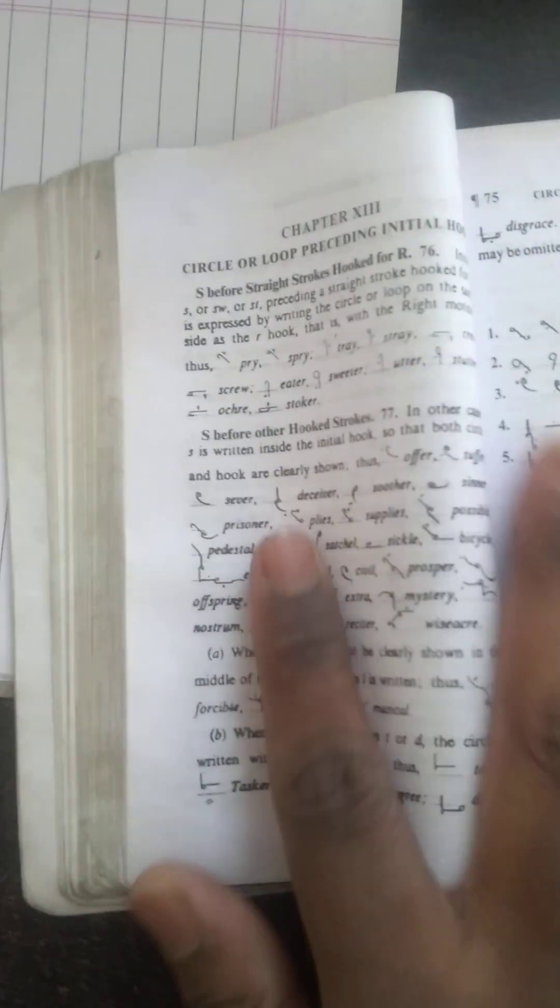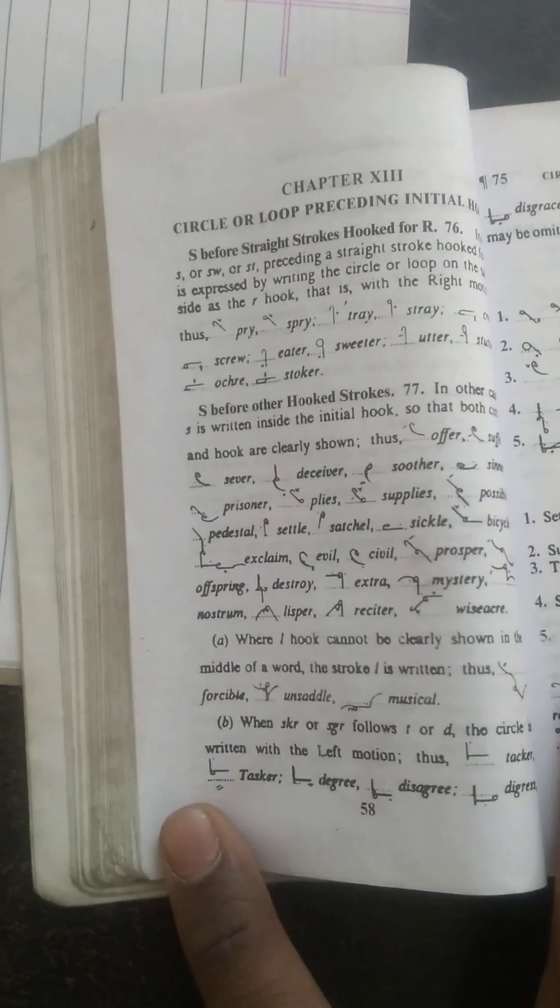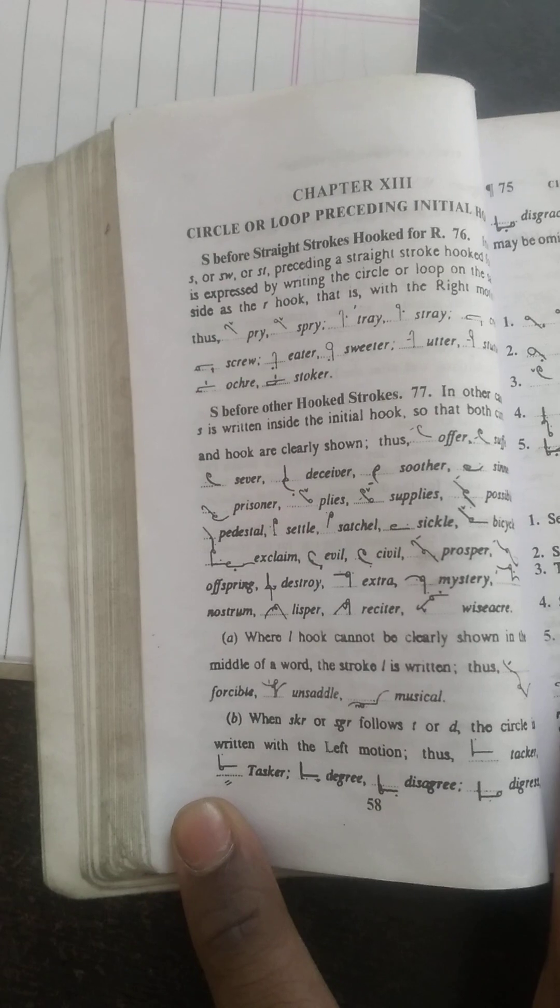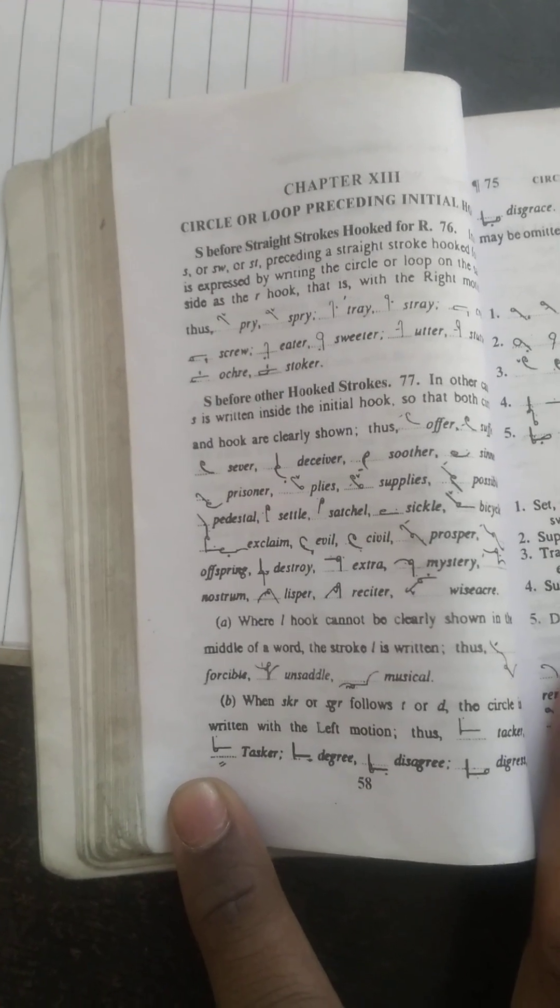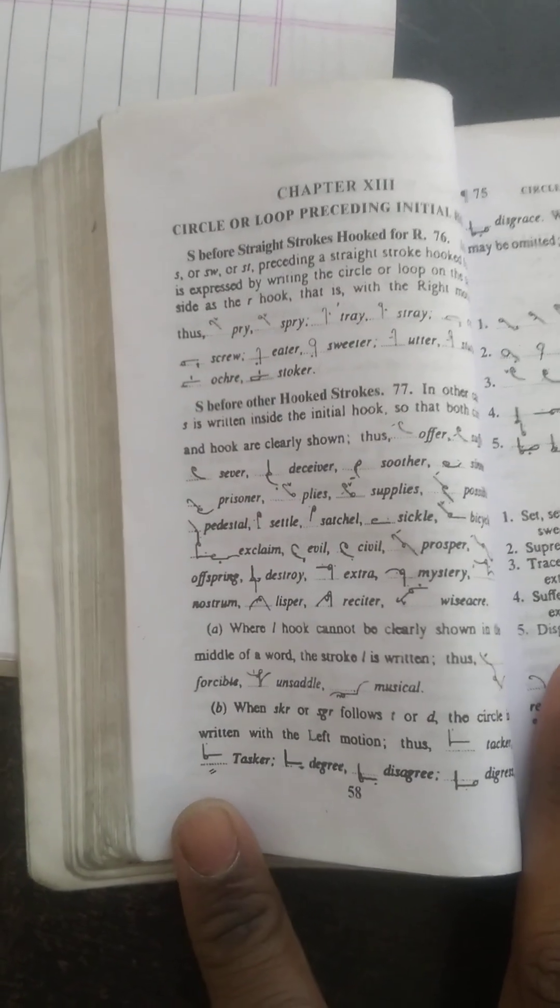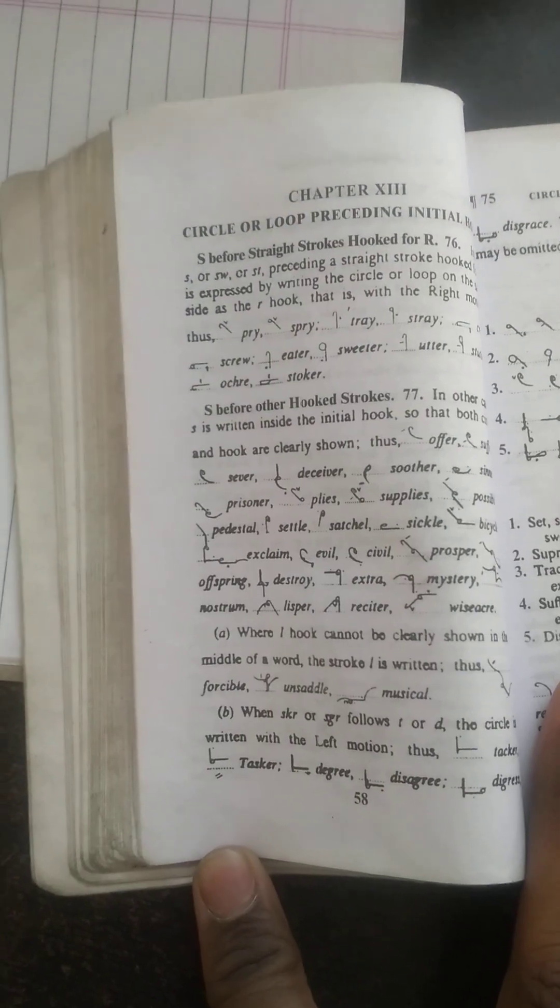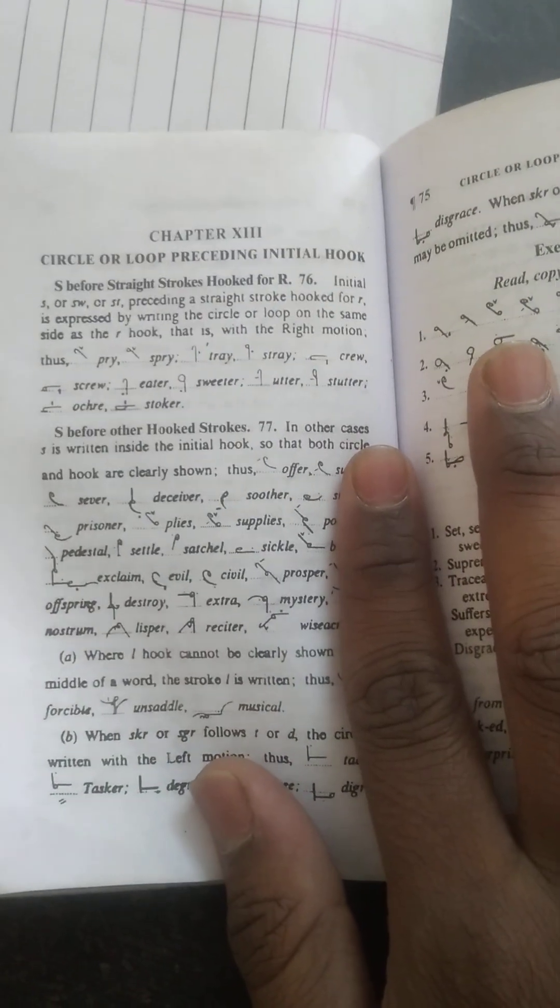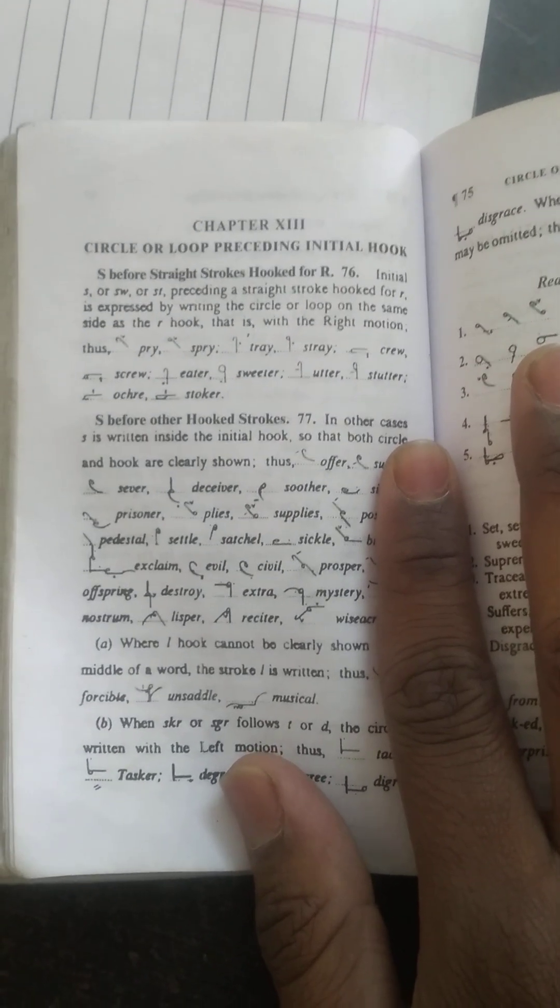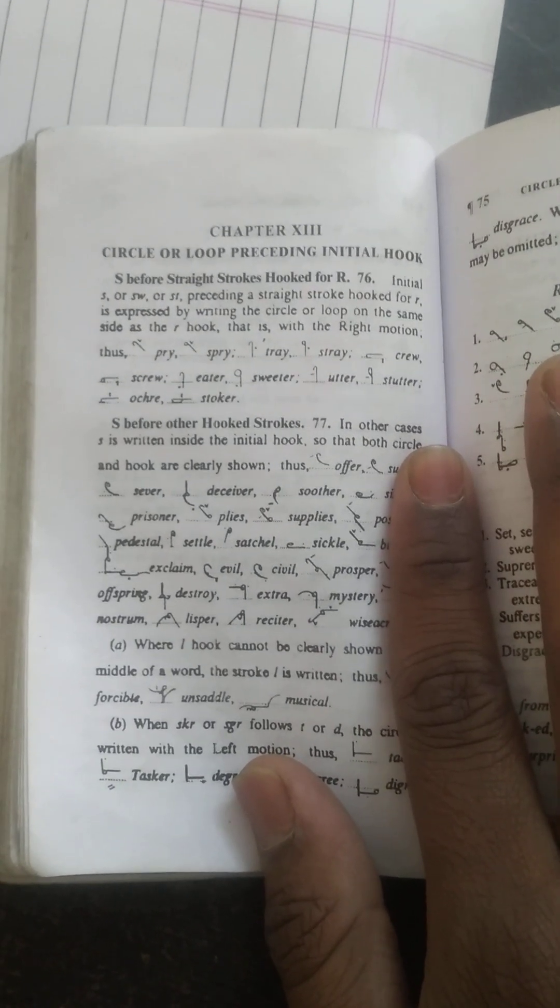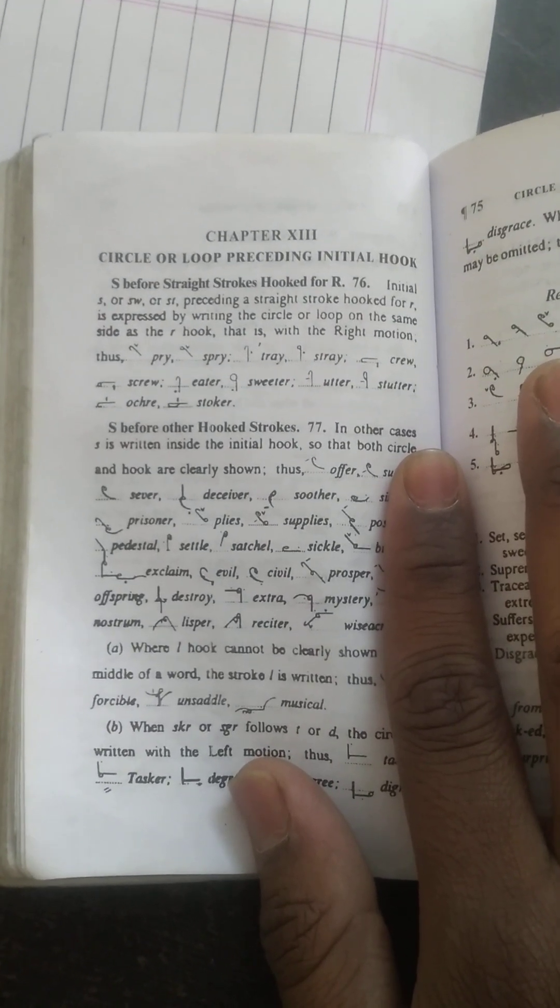As we put straight strokes, hooked form. Initially S or SS or ST, circle, la circle, loop, sitting in a straight stroke, hooked form is expressed by writing the circle or loop in the same direction as the hook, on the same side as the arrow, that is with the right motion.